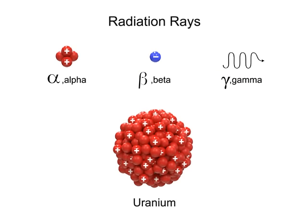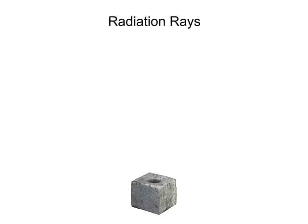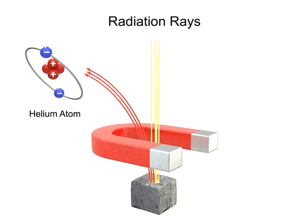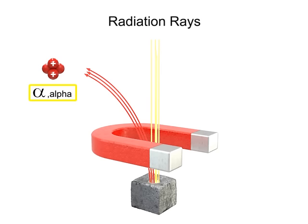Due to the distinct electrical charge characteristics of the alpha, beta, and gamma rays, they can be separated by directing a beam from a radioactive source through a magnetic field. Alpha rays carry particles originating from the nucleus of a radioactive atom. These particles consist of two protons and two neutrons — essentially positively charged helium atoms stripped of their electrons. The magnet causes these particles in the alpha ray to bend in one direction.